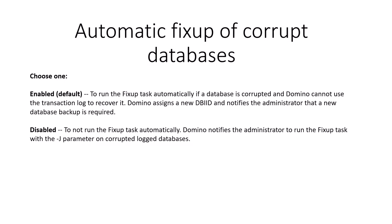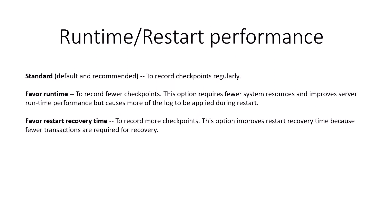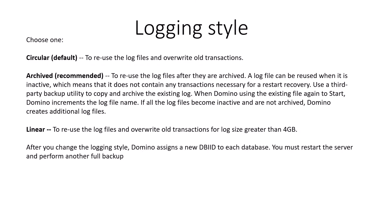Automatic fixup of corrupt database — choose enable or disable. If you enable it, fixup will run during automatic restart of the server. Whenever the database gets corrupted and you restart the server, your database will be fixed during the startup time. Runtime and restart performance — the default is standard, which records a checkpoint regularly. The second is faster restart recovery time.